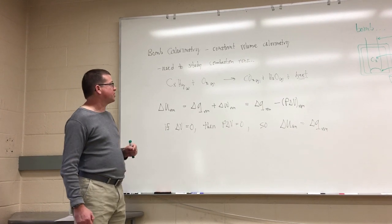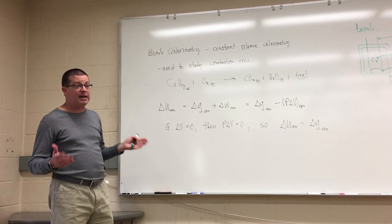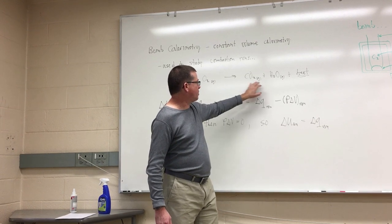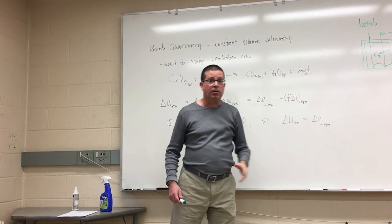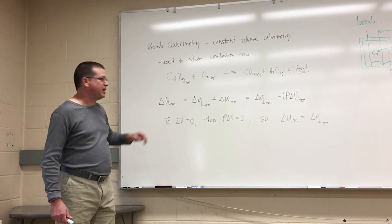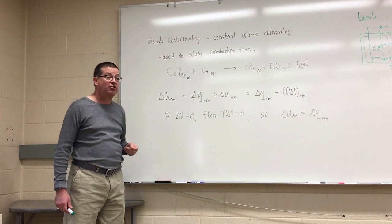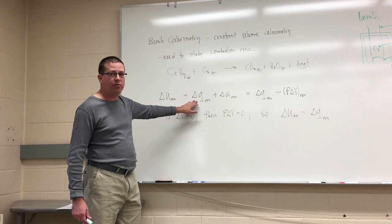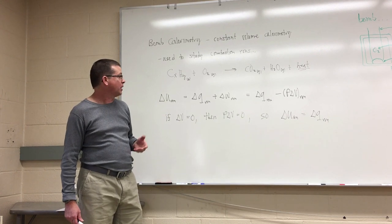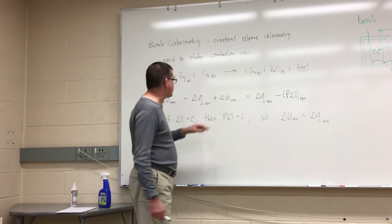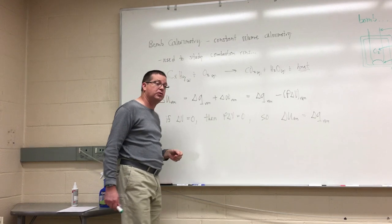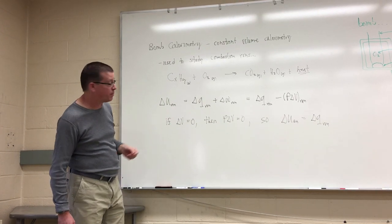Now, back to why we call this constant volume calorimetry and why we want to keep the volume constant. Because we're making gaseous carbon dioxide, gaseous water, and a lot of heat, we have a work term to think about. The change in internal energy of the reaction equals the sum of the heat and the work — either done by or on the reaction. The work term can be expressed as minus p times delta v, where delta v is the change in volume. This is known as p·Δv work.